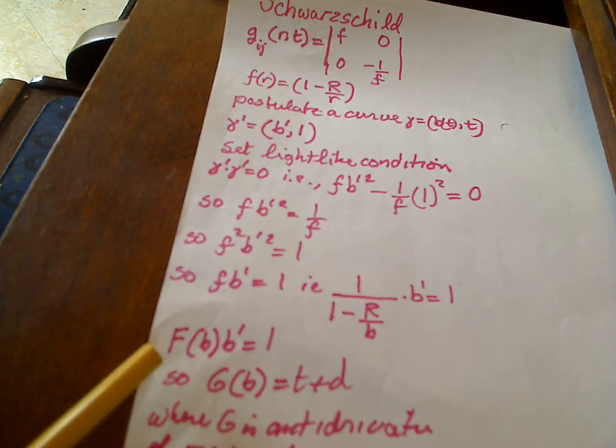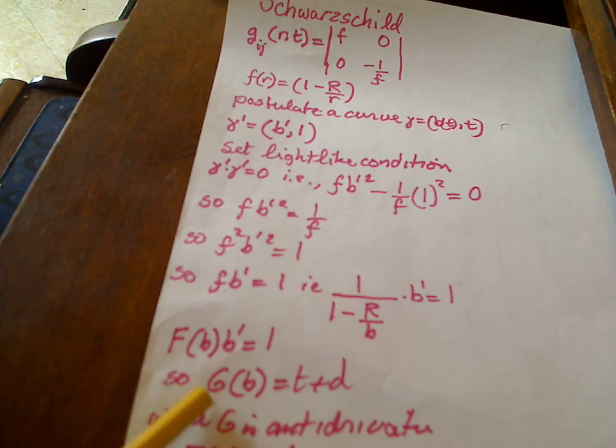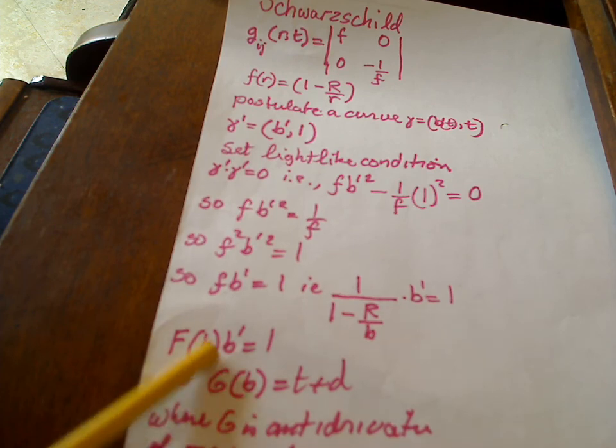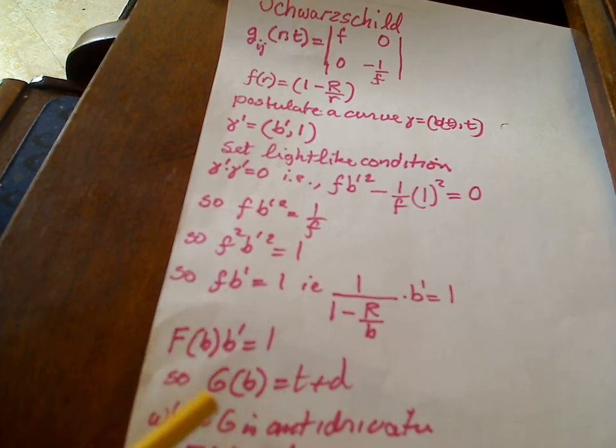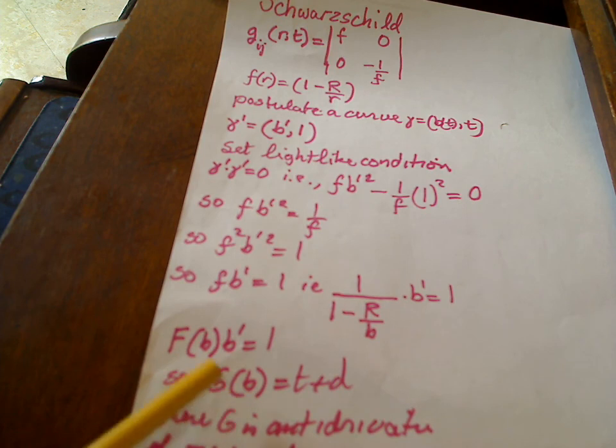So that would be the derivative, let's say, of G(b), which would be G'(b) times b', and G'(b) will be this f(b) right here. And so this would be G' equals 1, therefore G(b) will be t plus some constant d.